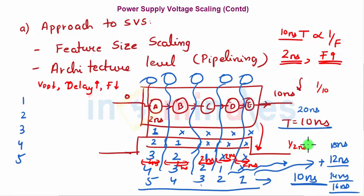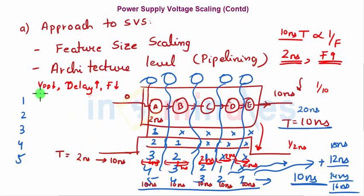In static voltage scaling, the goal is to reduce supply voltage. If I keep my time period at 10 nanoseconds and don't reduce it to 2 nanoseconds — meaning I am okay with the delay — then the time period has gone from 2 back to 10. Because I'm okay with the delay, I can reduce VDD to a new value VDD* equal to VDD divided by 5. I don't need to increase VDD to run faster; I'm comfortable with a longer delay.